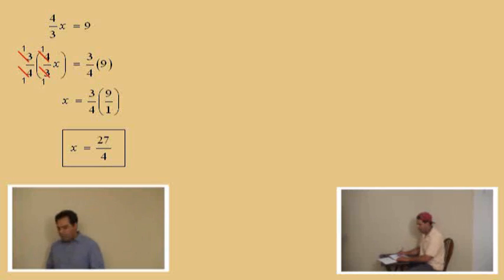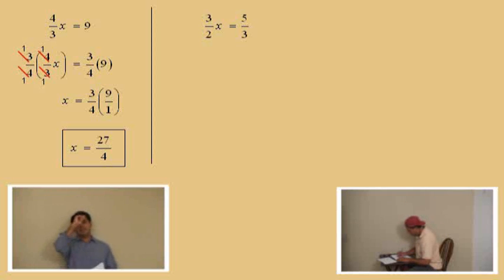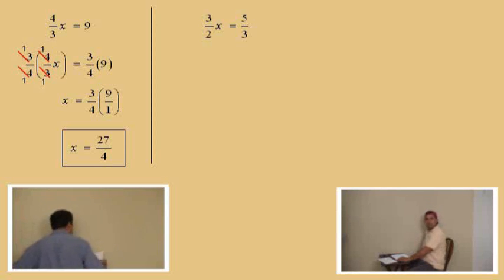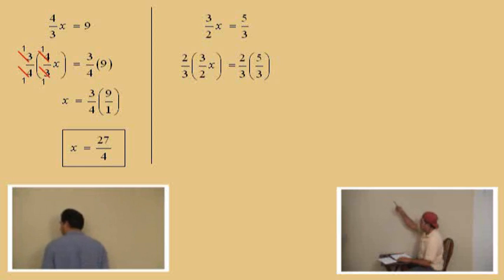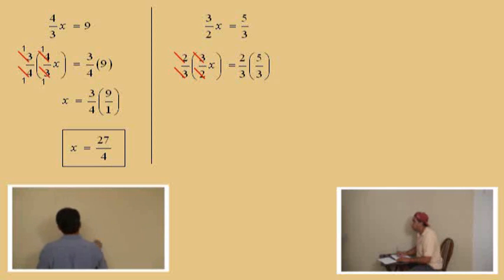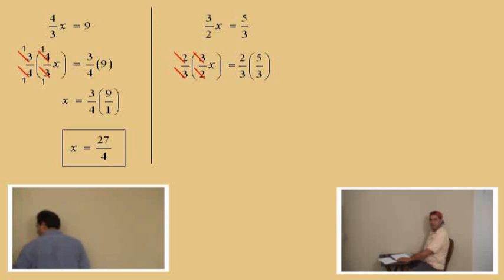Now let's look at another problem where we have a fraction on both sides. We'll use the reciprocal technique again — we have three halves x and we need to multiply both sides by the reciprocal of three halves. What's the reciprocal of three halves? Two thirds. So we multiply both sides by two thirds. The twos cancel, the threes cancel, giving one x on the left. On the right, nothing reduces — multiply straight across: x equals ten ninths.